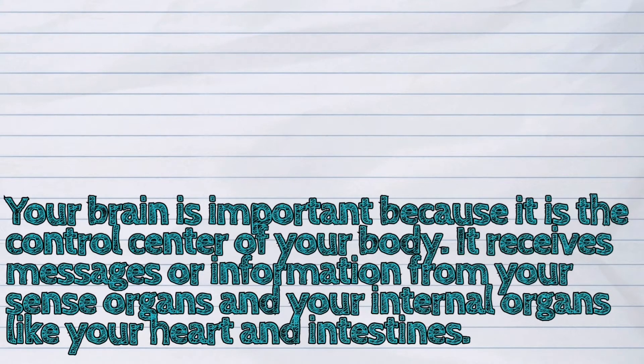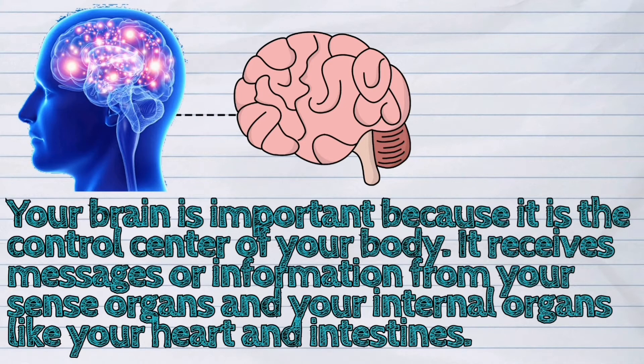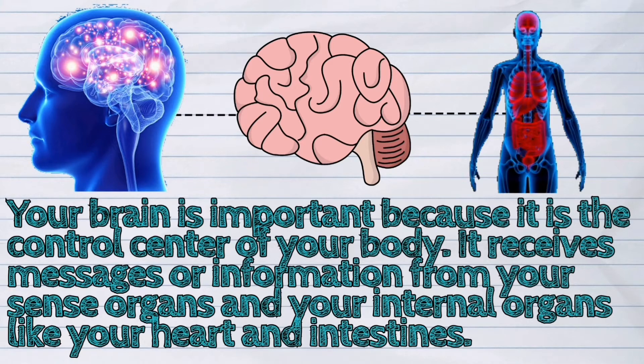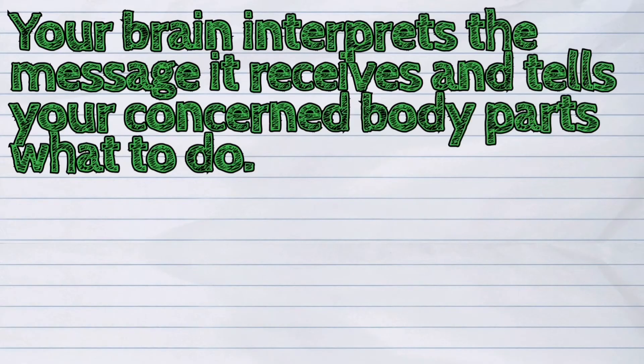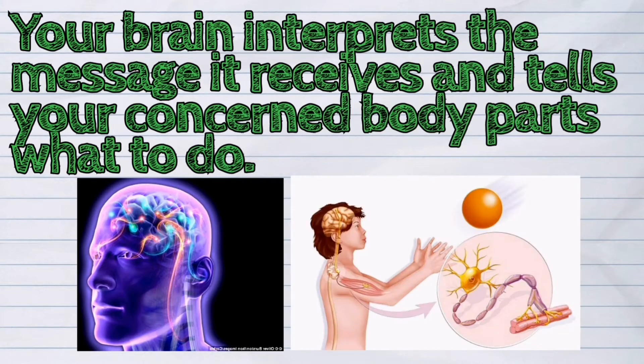Your brain is important because it is the control center of your body. It receives messages or information from your sense organs and your internal organs like your heart and intestines. Your brain interprets the message it receives and tells your concerned body parts what to do.